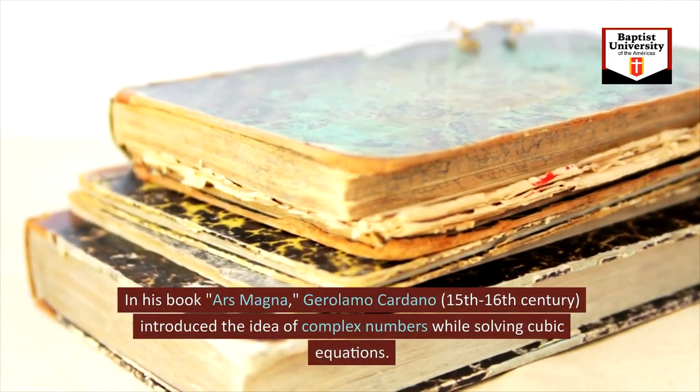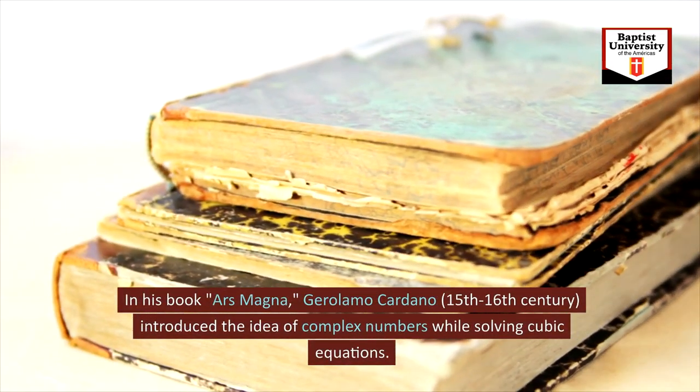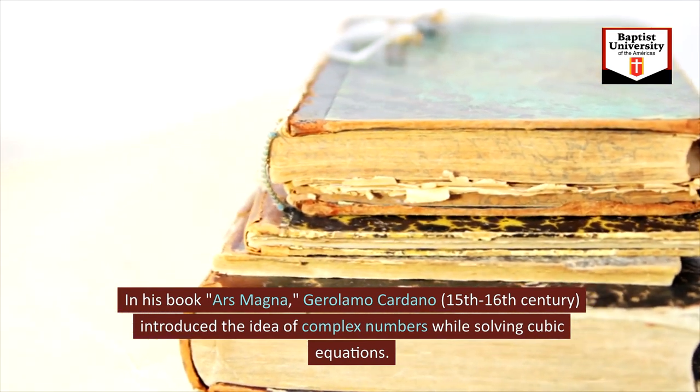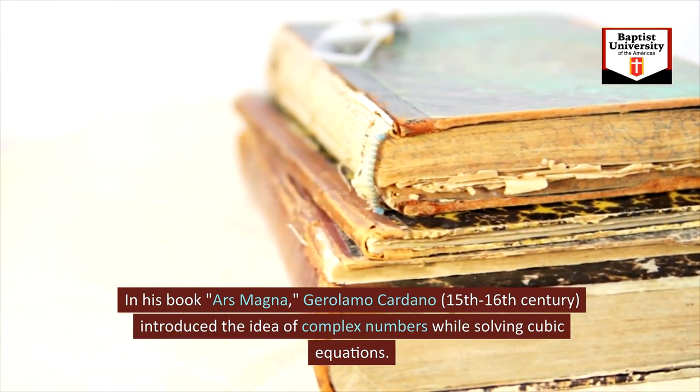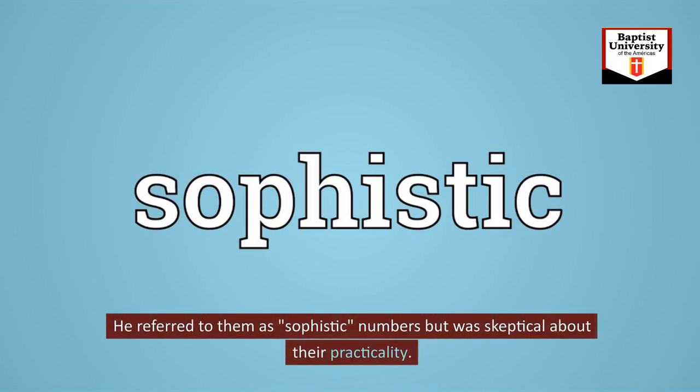In his book Ars Magna, Girolamo Cardano, 15th to 16th century, introduced the idea of complex numbers while solving cubic equations. He referred to them as sophistic numbers but was skeptical about their practicality.